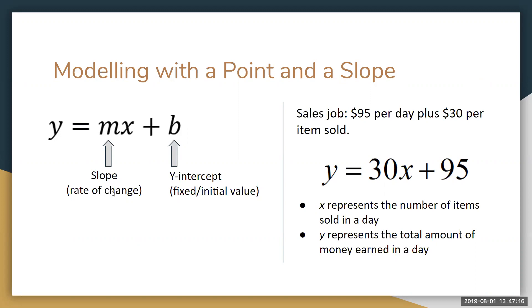For example, say you have a sales job where you earn $95 per day plus $30 per item sold. We can model this with an equation identifying that $95 per day is your fixed rate each day, and the $30 per item sold is your rate of change, which is a constant growth rate. We can plug that into y equals mx plus b, where 30 is m and 95 is b. What this model does is it takes in x values, which represent the number of items sold in a day, and it spits out y values, which represent the total amount of money earned in a day.